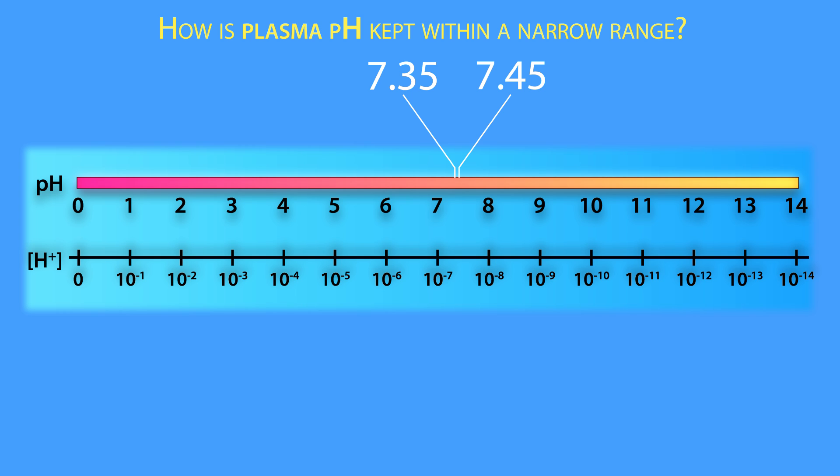So the plasma pH is kept within this narrow range through the combination of buffering and elimination by the lungs and kidneys.